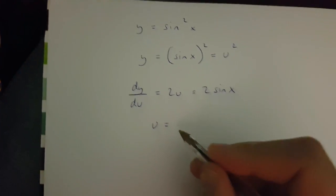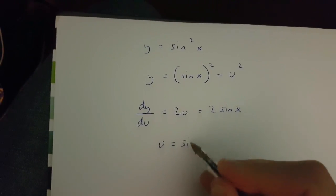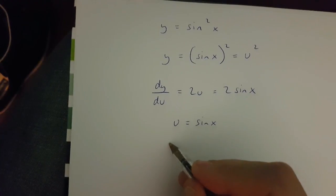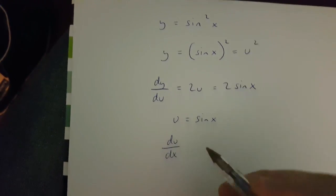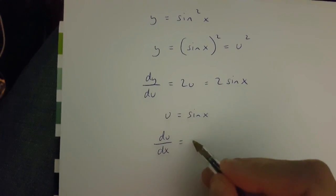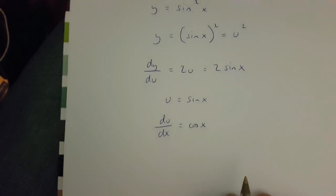Now if u is equal to sin x, then du over dx is going to be equal to cos x.